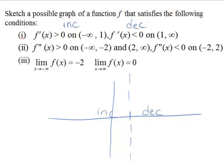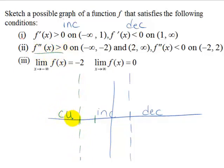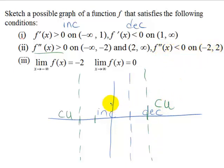The second derivative is positive on the interval from negative infinity to negative 2, so I'm going to mark this interval. A positive second derivative tells me the graph is concave up here. From 2 to infinity, it's also positive so it's also concave up. The second derivative is negative from negative 2 to 2, so in between here is concave down.